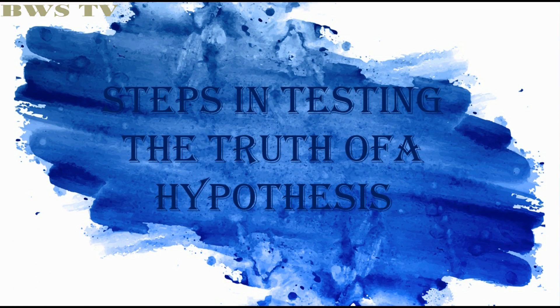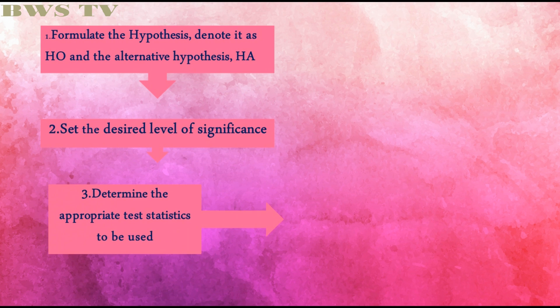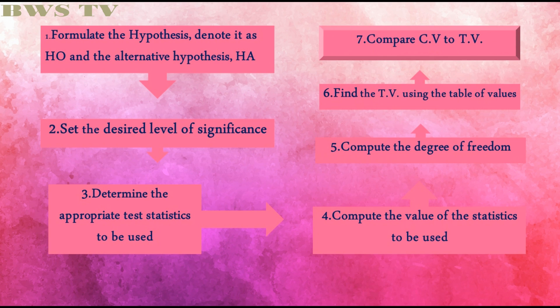Steps in testing the truth of the hypothesis. First, formulate the hypothesis, the null hypothesis H0 and the alternative hypothesis H1. Second, set the desired level of significance. Third, determine the appropriate statistic to be used. Fourth, compute the value of the statistic to be used. Fifth, compute the degree of freedom. Sixth, find the t-value using the table of values. Seven, compare t-computed to t-tabular.